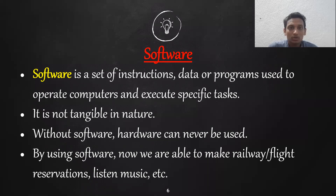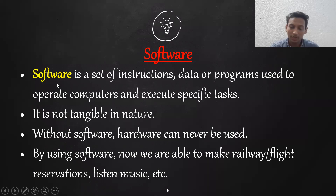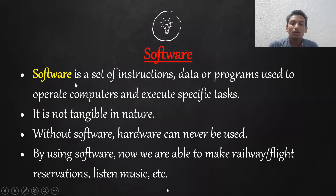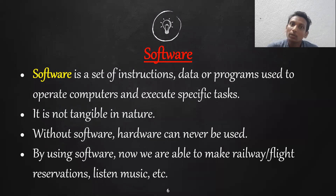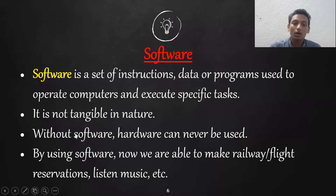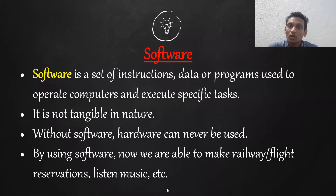Software is not tangible in nature. The definition of software: software is a set of instructions, data, or programs used to operate computers and execute specific tasks. Software is not tangible — you cannot touch it, unlike hardware devices. For example, the operating system on your computer or mobile is software.